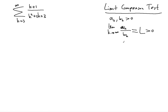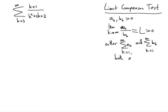If that's true, then either the series a_k and the second series b_k both diverge or both converge — they are interdependent. So either both converge or both diverge, provided that the limit value of the quotient of these two terms as k goes to infinity is greater than zero. Only then can you base divergence or convergence of both.